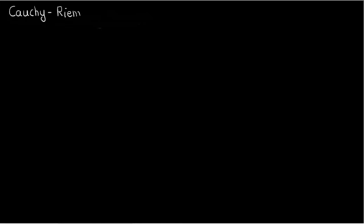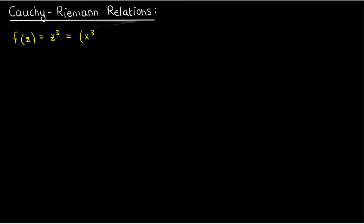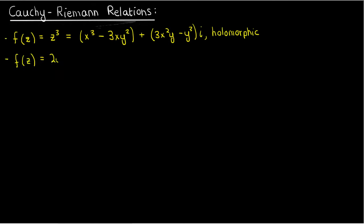In the last video we looked at two examples of complex functions, one of which was holomorphic, while the other wasn't. By holomorphic I mean it was differentiable. For these examples, z cubed was holomorphic or differentiable everywhere, while 2y plus xi wasn't holomorphic anywhere. So how is it that a function with certain real and imaginary parts was holomorphic, but another wasn't? It's because for a complex function to be holomorphic, we need some special relationships between its real and imaginary parts to be satisfied. So even though 2y and x are each continuous and differentiable in real space, the fact that they don't satisfy these special relationships makes the complex function overall non-holomorphic.